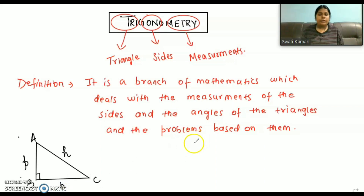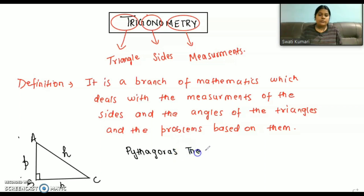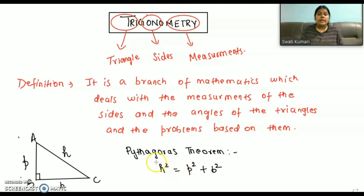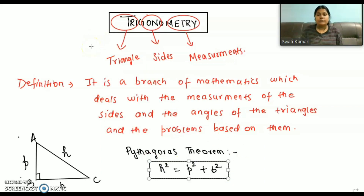This perpendicular line we are denoting by P, and this is the base which we are denoting by B. Whenever we talk about a right angle triangle, we know one theorem called the Pythagoras theorem. This theorem states that the square of the hypotenuse is equal to the sum of the squares of the perpendicular and the base: H² = P² + B². This theorem is very important in this chapter — it is the base of trigonometry.